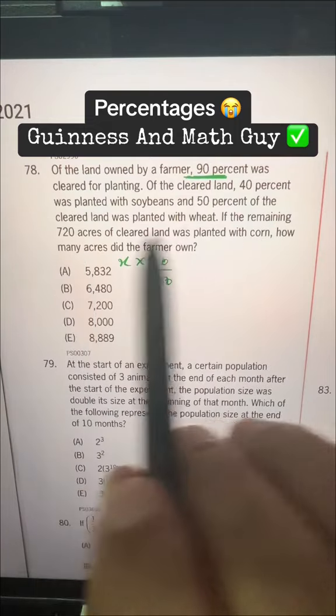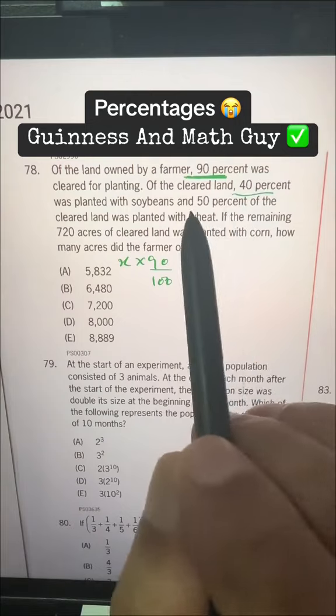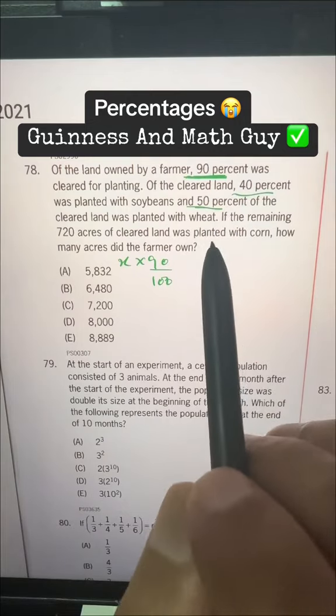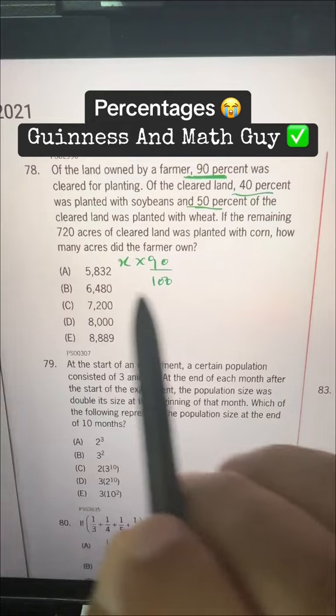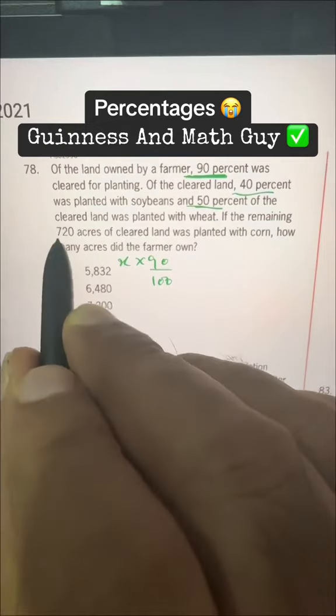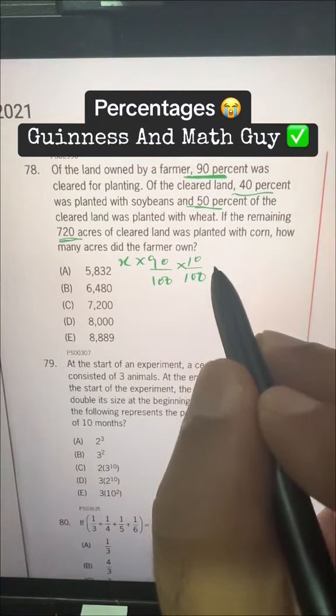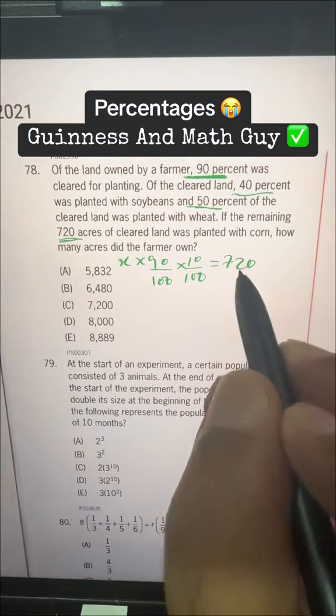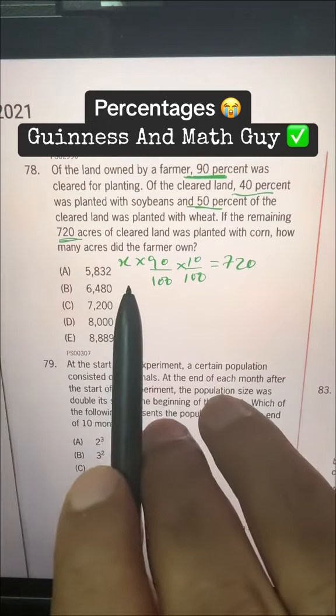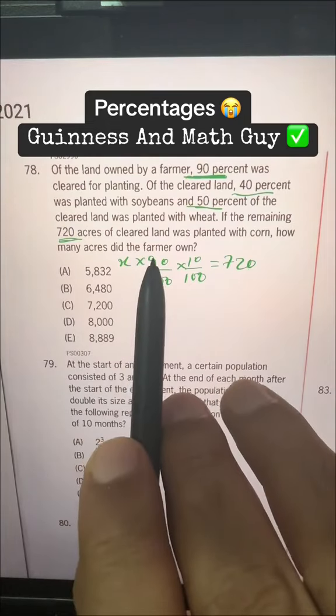if the remaining 720, so after planting these two, the remaining 10% of this land, cleared land, is 720. So, remaining 10% is 720. So, how many acres did the farmer own?